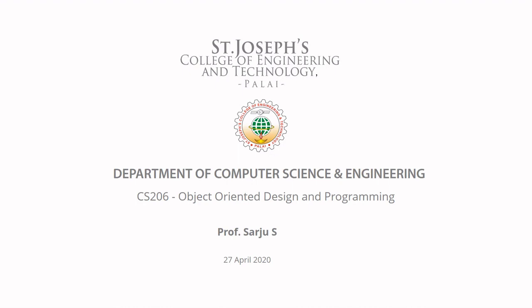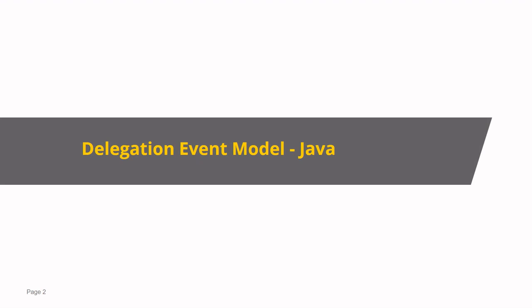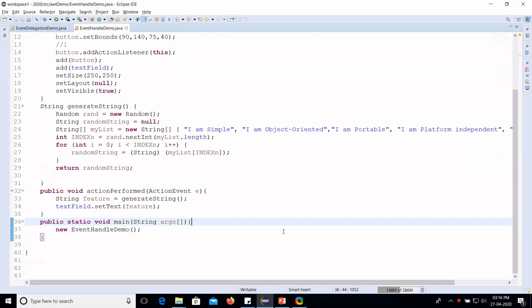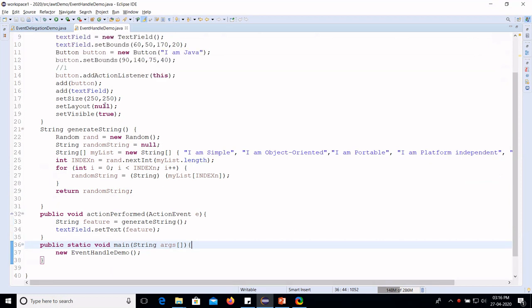This is the fifth module on object-oriented design and programming — the second lecture in the series. In this lecture, we are going to discuss the event delegation model in Java. Before going into the fundamentals of the event model, let's look at a small example to understand how this event model works.